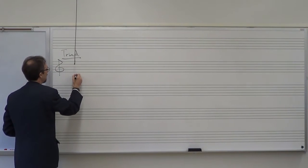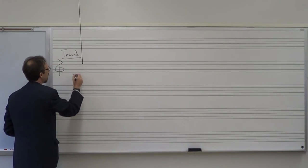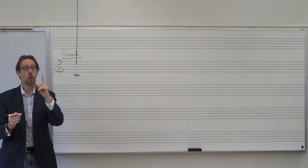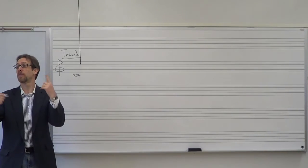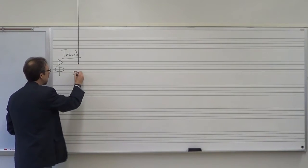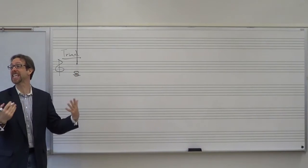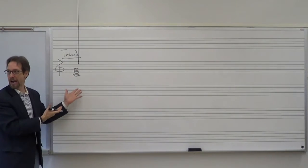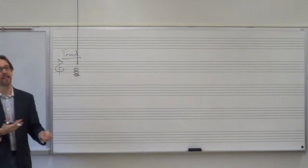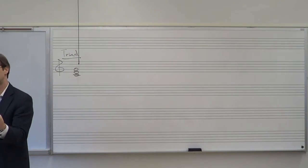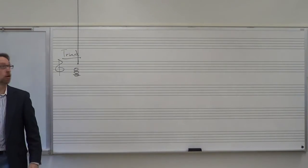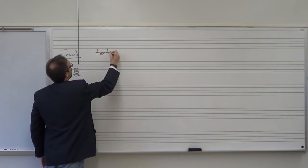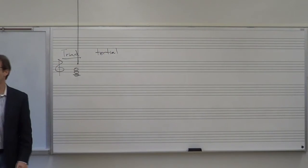If I start with a C, that's one of my three notes. What's a third above C? An E. What's a third above E? A G. Triad. A triad is a three-note chord stacked in thirds, also called tertial harmony.